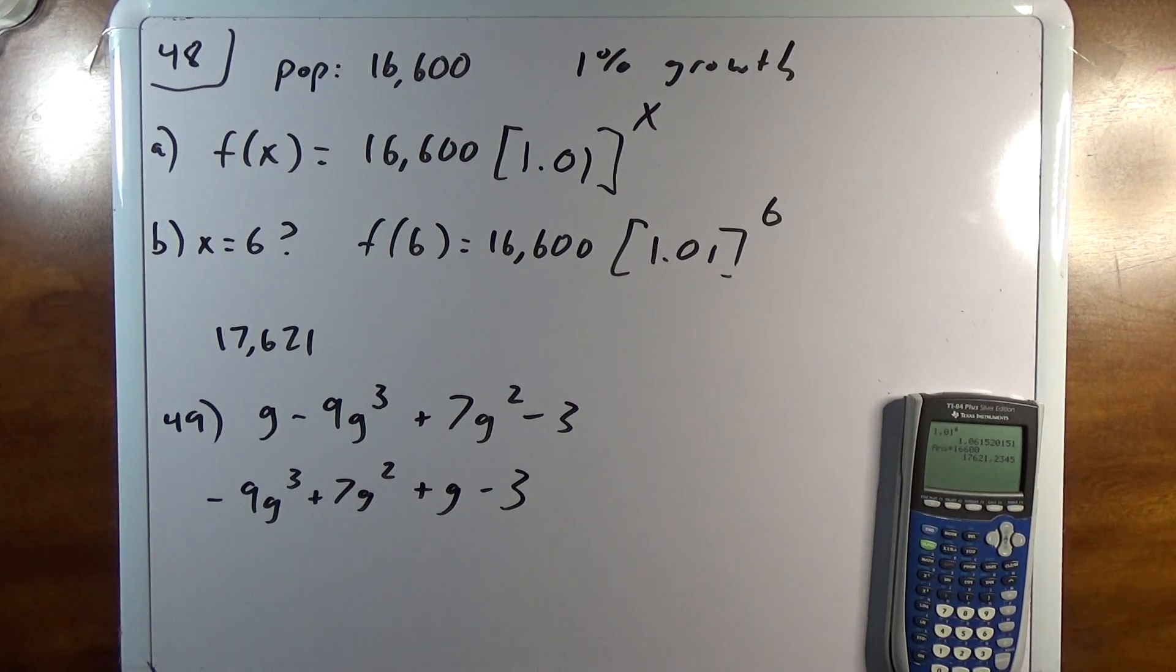So that's a standard form, descending order, and there's nothing I could, I would combine like terms first if I could. 50 says classify the expression with its name. 10X squared minus 6X plus 3.